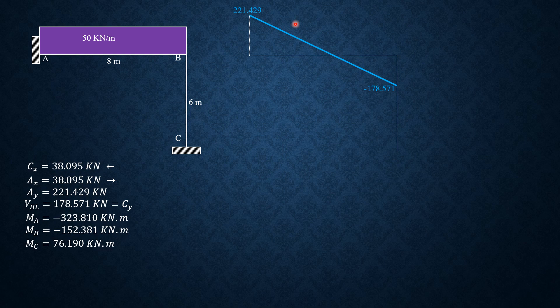That would be negative 178.571, which is Cy. Then this distance is 221.429 divided by 50, or use similar triangles. So that's 4.4286 meters. Therefore, this is 8 minus 4.4286, and that's 3.5714 meters.